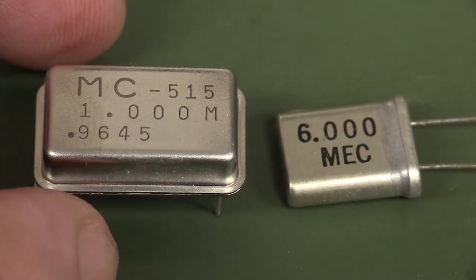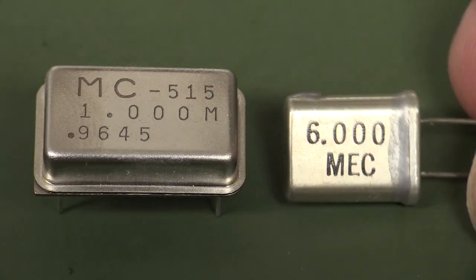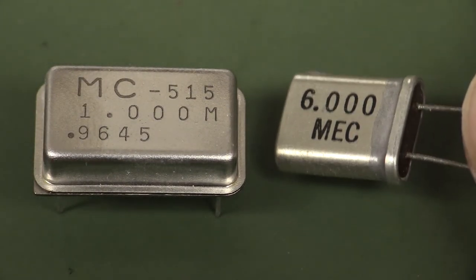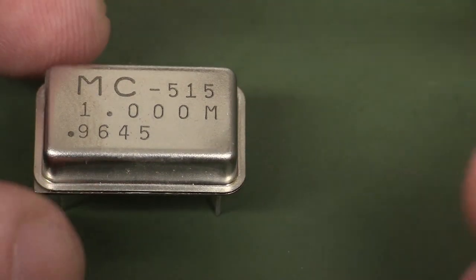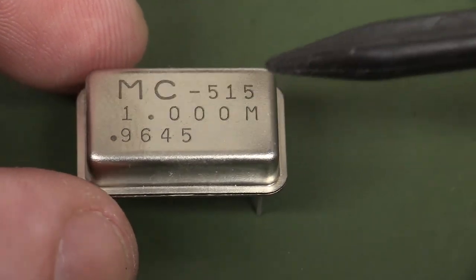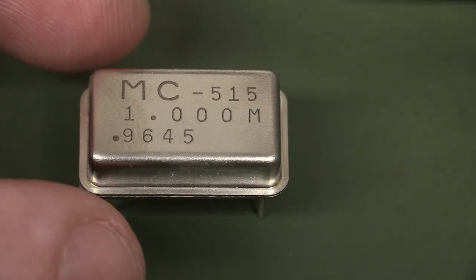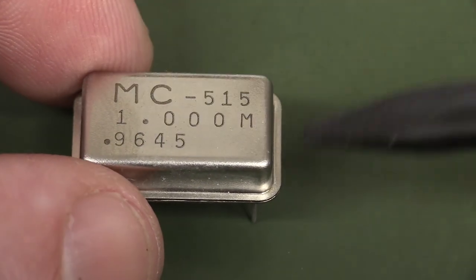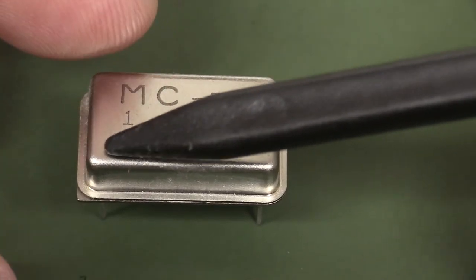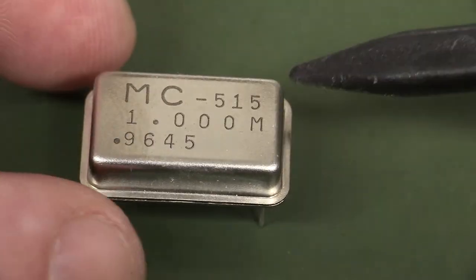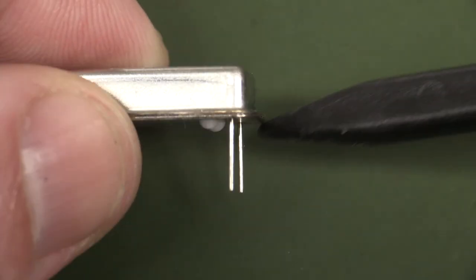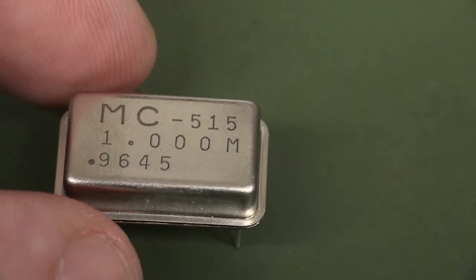This is a complete oscillator. It basically contains a crystal of some description. They do come in many different types and physical form factors. But this will also have, in this case it's a HCMOS oscillator circuit. You've got a power pin, a ground pin, a not connected or tri-state enable pin, and an output pin. And it outputs a square wave.